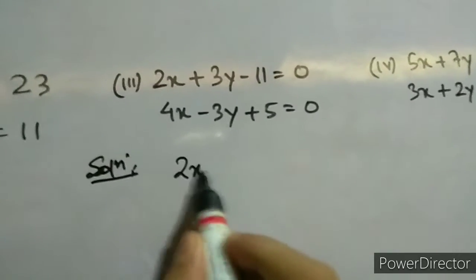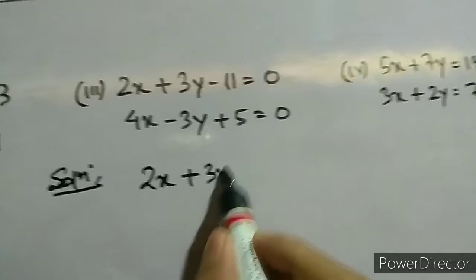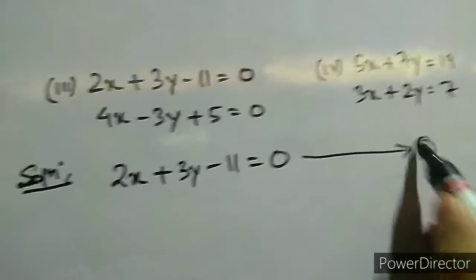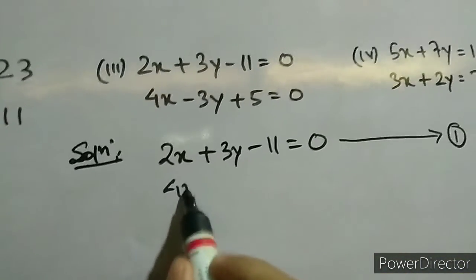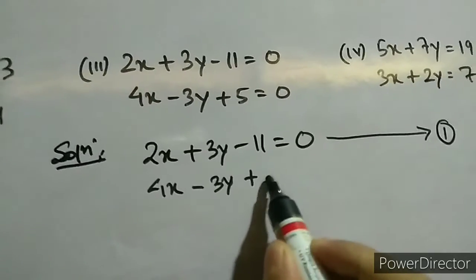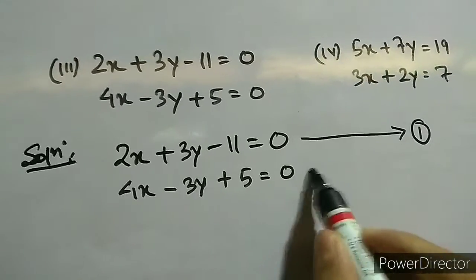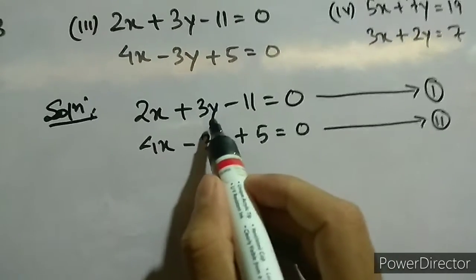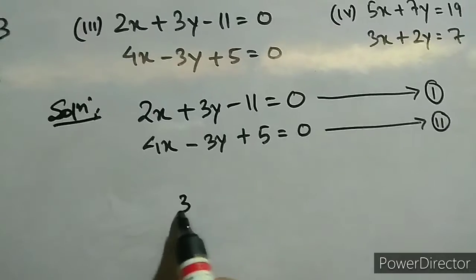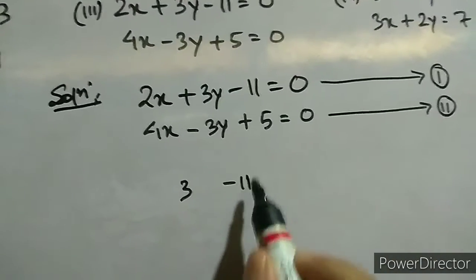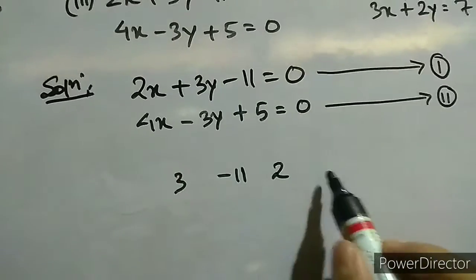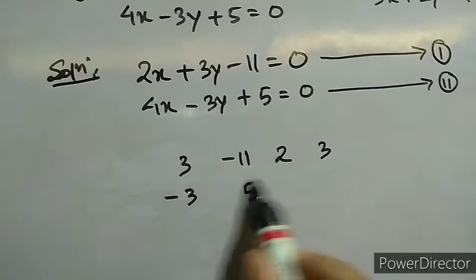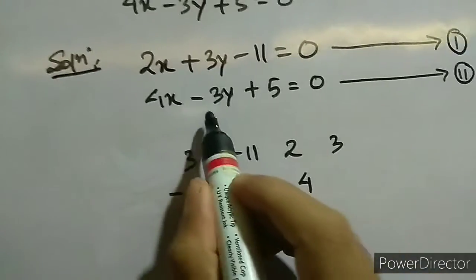Next is question number 3. The first equation is 2x plus 3y minus 11 equal to 0 — it is already in standard form so we can write it directly as equation 1. For the second equation, the y coefficient is minus 3, constant is 5, and x coefficient is 4.